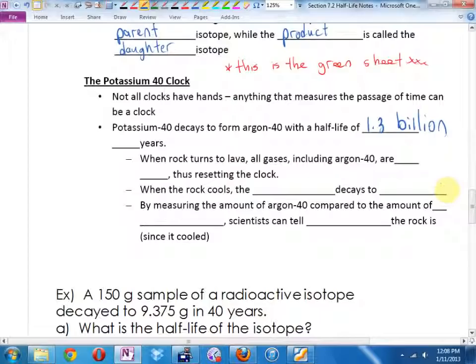So, this is how we can use this to figure out how old something is. When rock turns to lava, all the gases, including argon-40, because argon-40 is a gas, they are released. They bubble out. And that resets the clock back to zero. After rock has been lava, it has no more argon-40 in it. It still does have potassium-40, though, Hayden, because potassium-40 is a solid. It was melted with the lava.